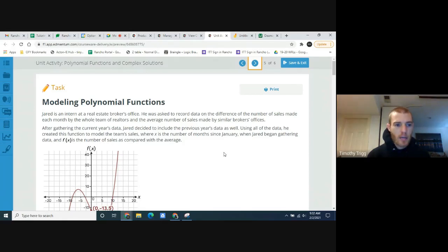Using all of the data, he created this function to model the team sales where x is the number of months since January when Jared began gathering data and f of x is the number of sales as compared to the average.